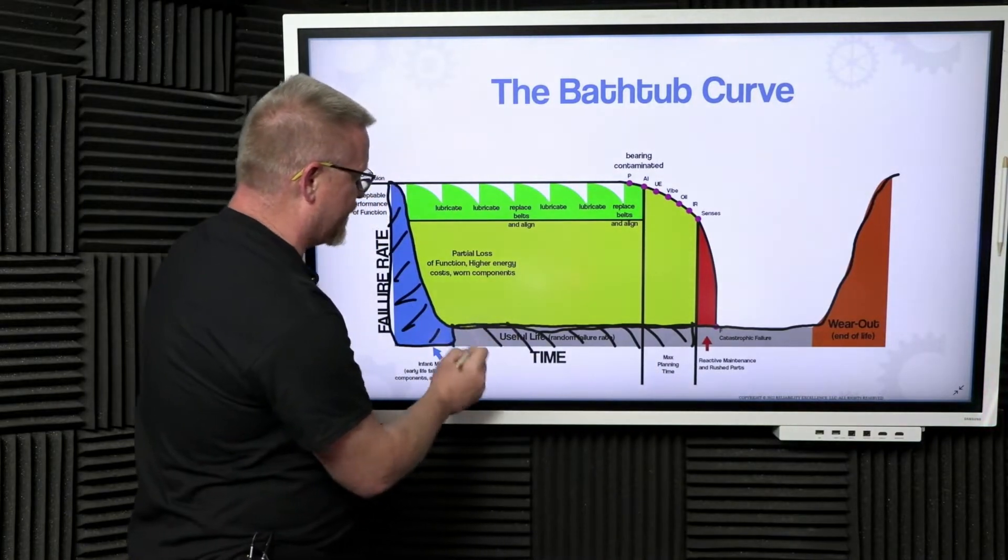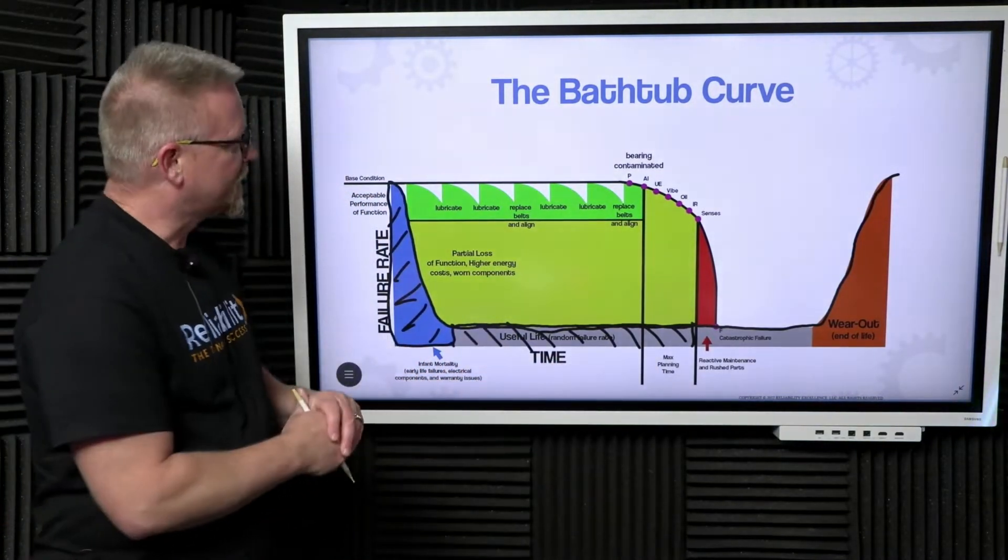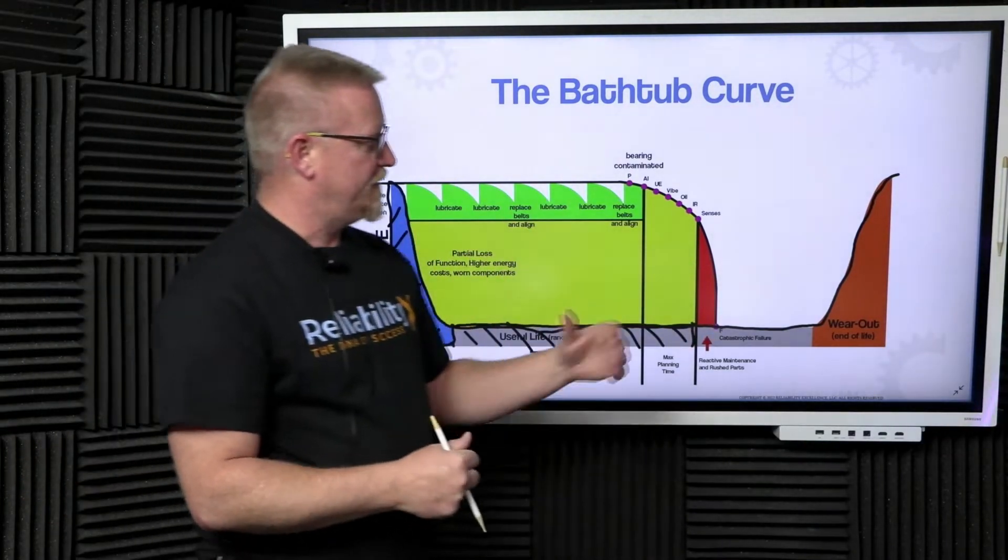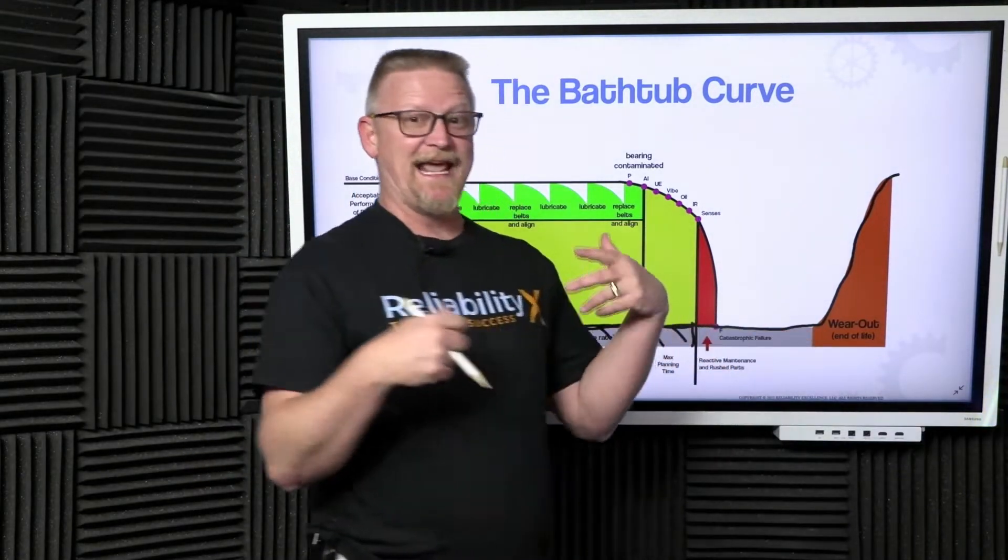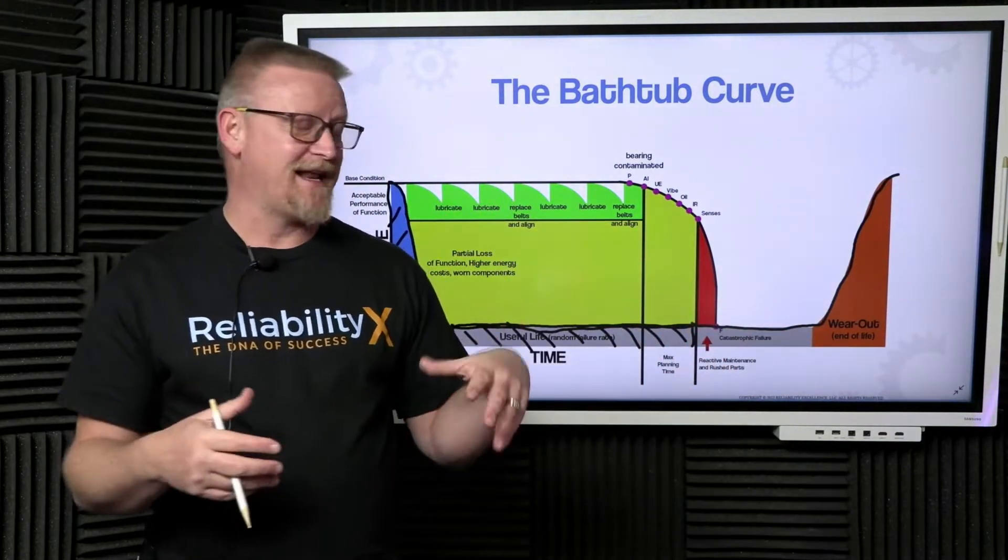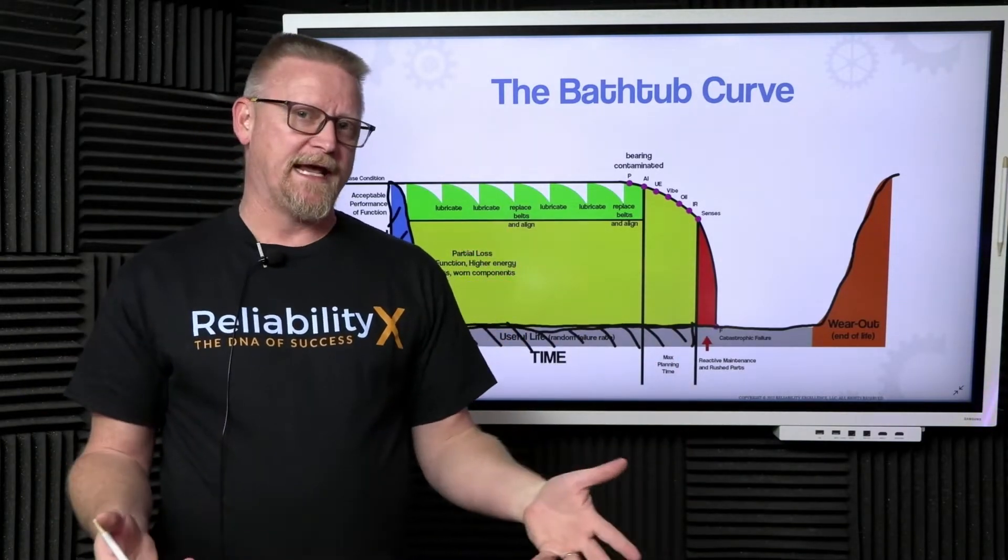The useful life is comprised of random events. We're going to get back to that in just a second. Further downstream we've got wear out.